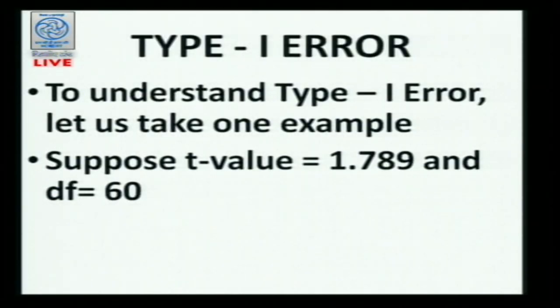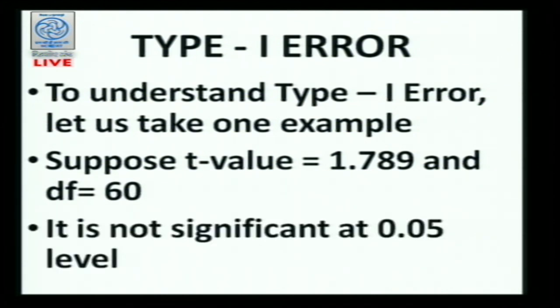To explain Type 1 error, suppose the T value is 1.789 and the degree of freedom is 60. If I look at this value in the standard T-test table, I may find that this value is not significant at the 0.05 level. I have already explained that the researcher can have a maximum of 5 percent error — 0.05 is the lowest level of significance. We test it at the lower level first and then go to the upper side. In this case, the T value is not significant.